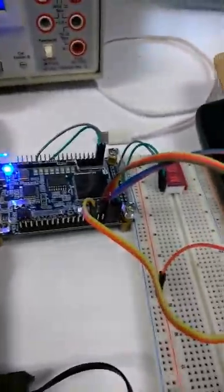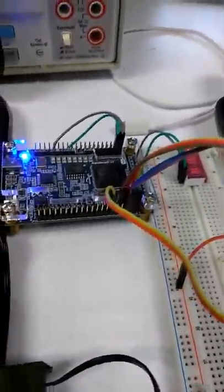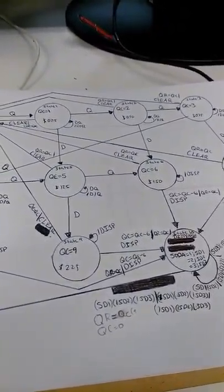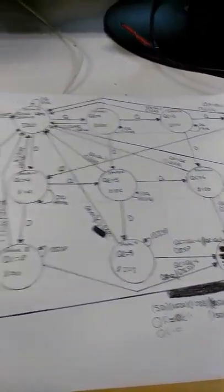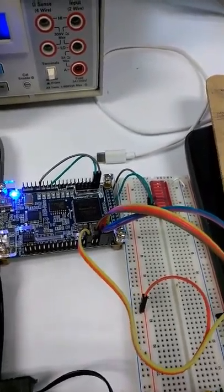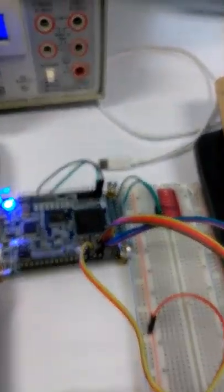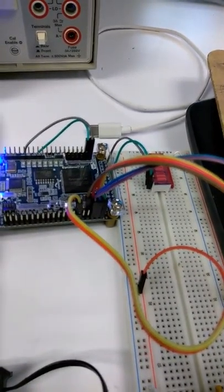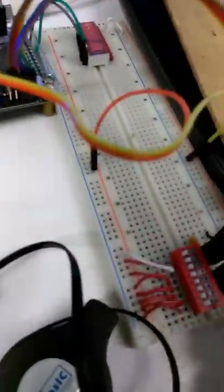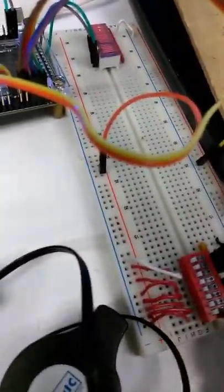For my final project I decided to do a vending machine with 10 states. This vending machine only accepts dollars and quarters, and it sells sodas — three different choices — for $1.50 each. The input for quarters is input one, switch one.